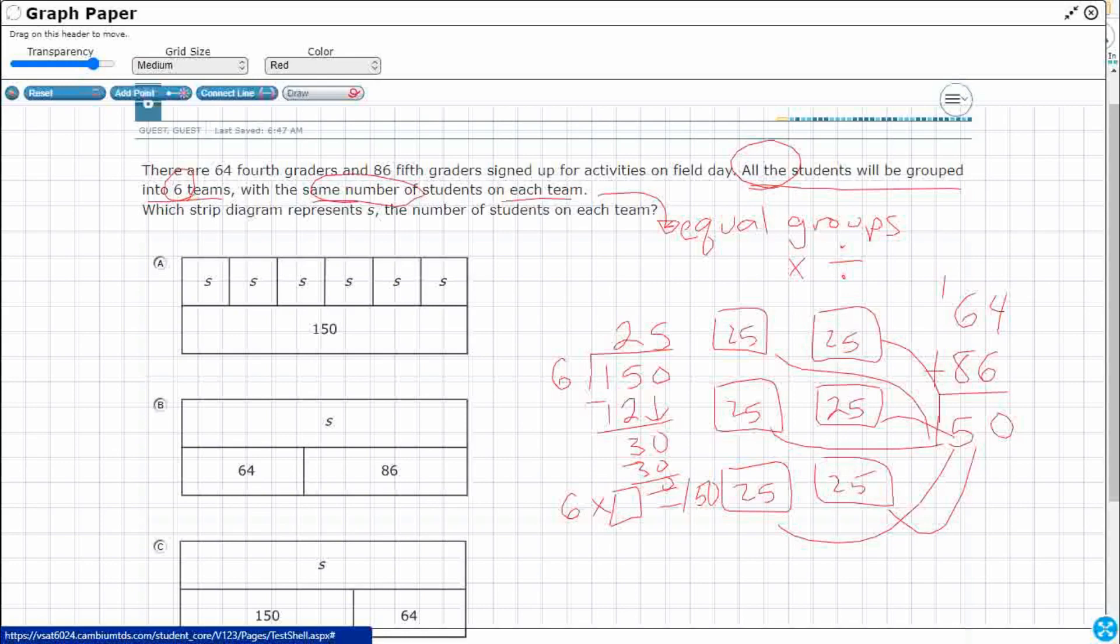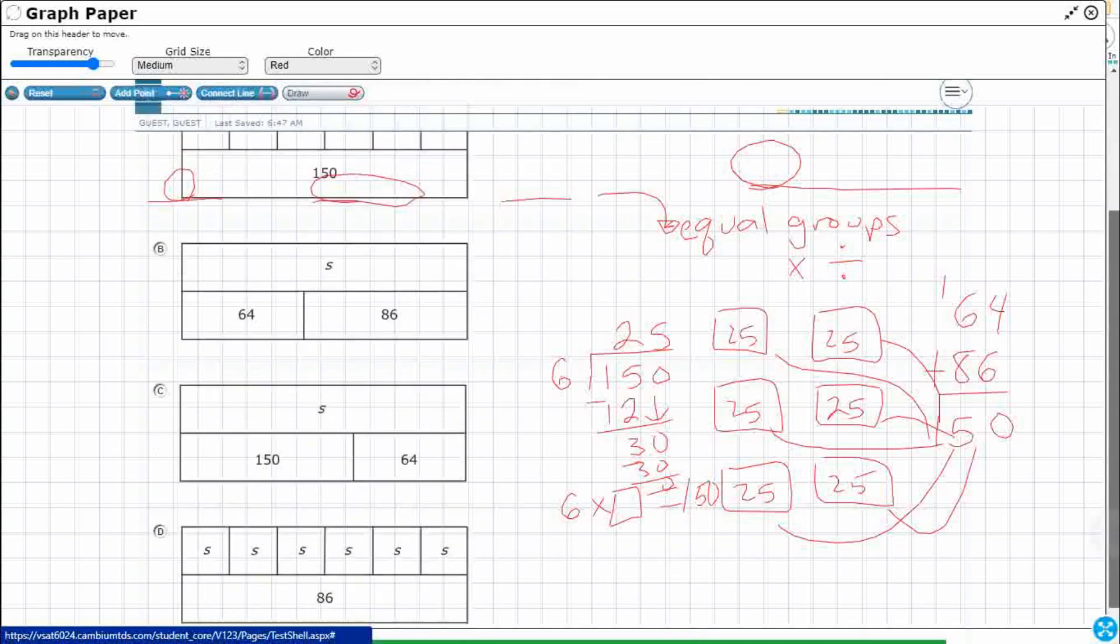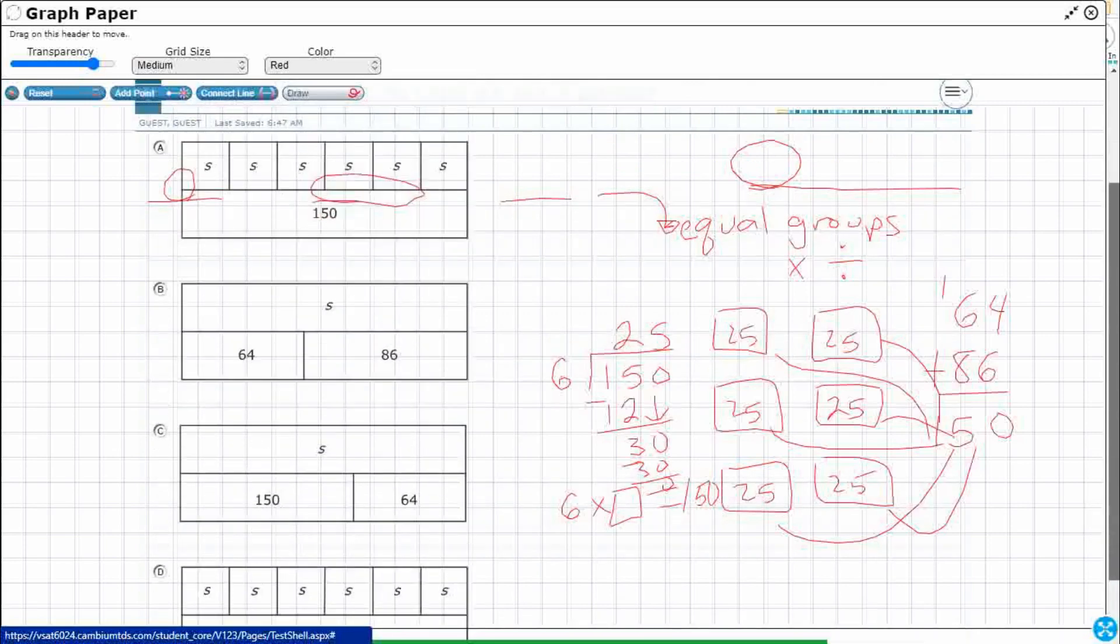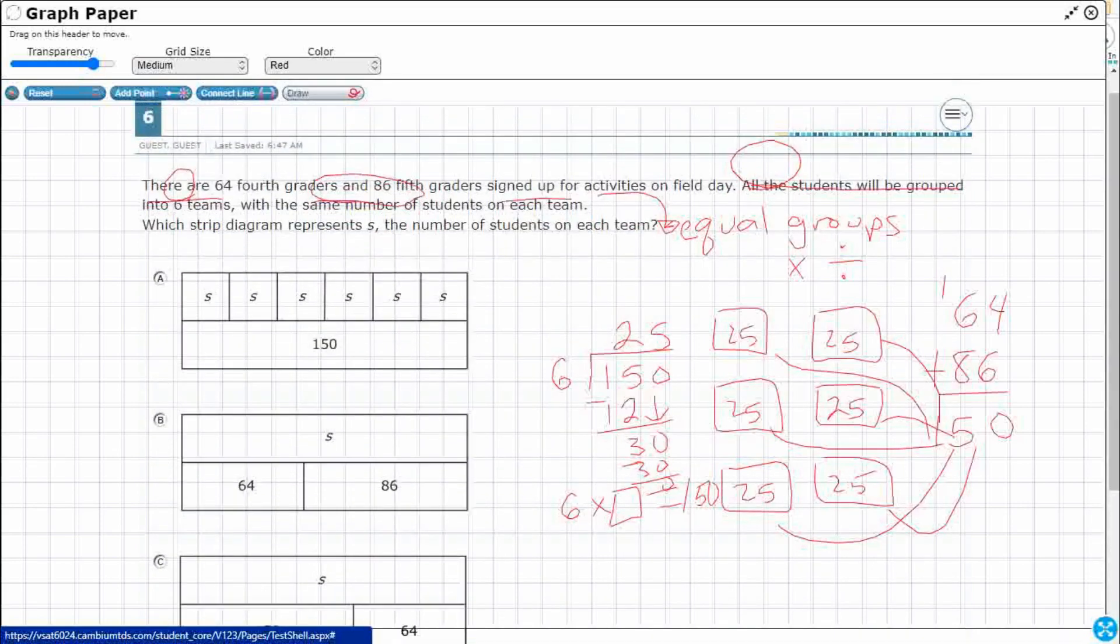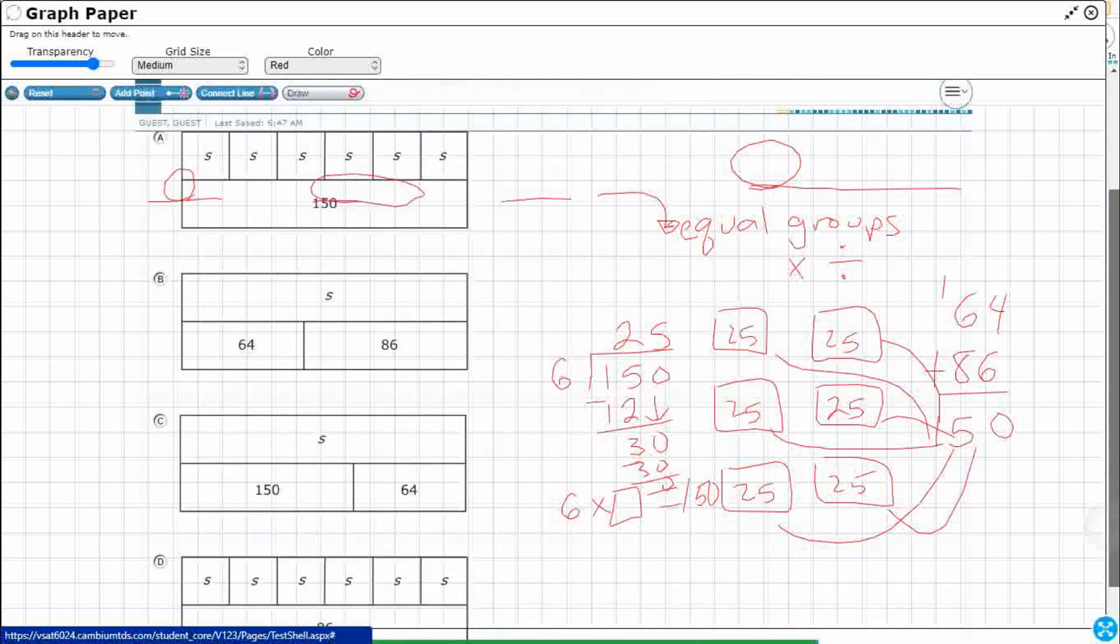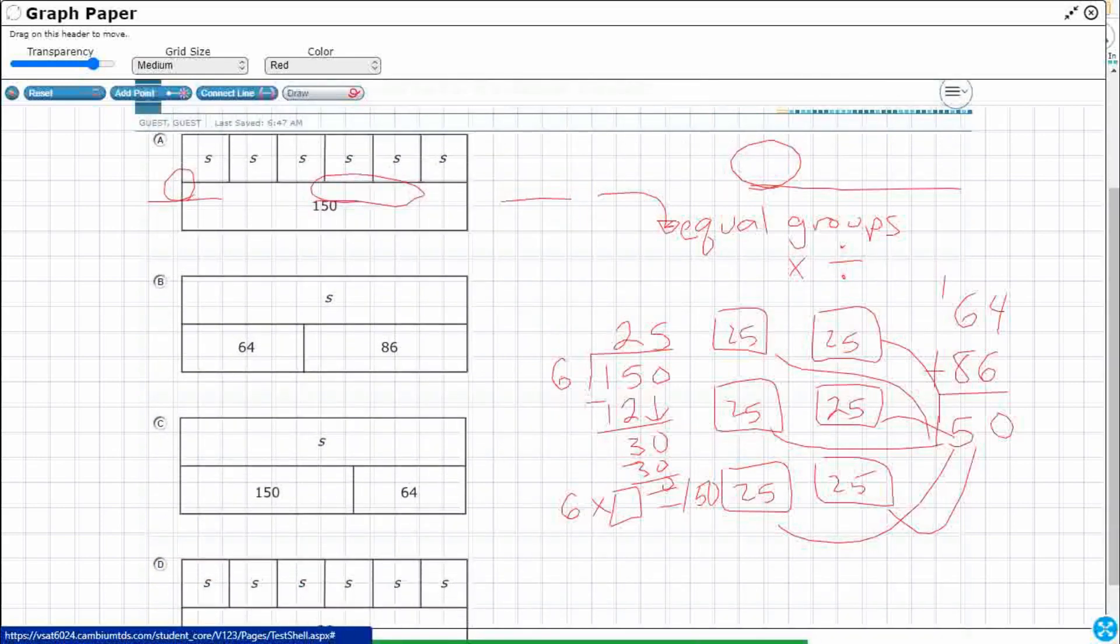Now, which of these strip diagrams best represent that? You see how the drawing kind of stays the same as I'm scrolling here. So let's kind of get all four options on there. We'll just kind of ignore what we see up there. I'll switch to blue.